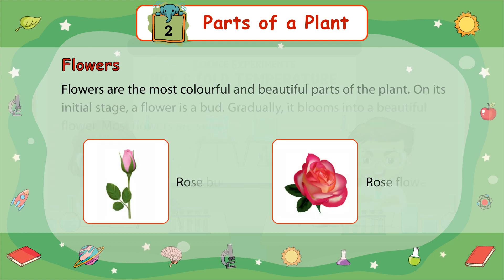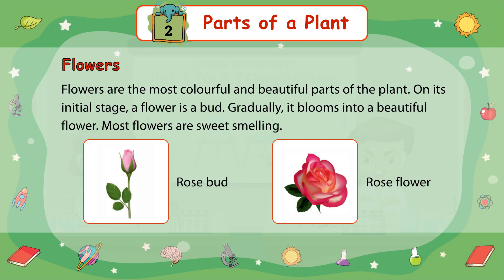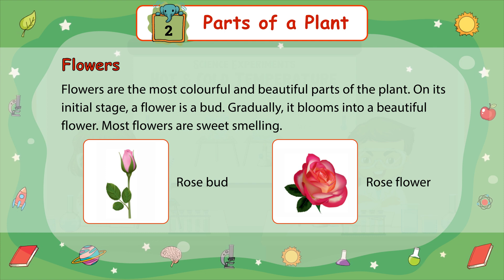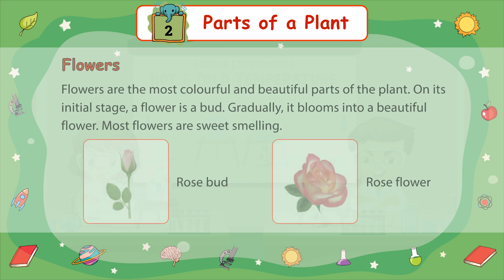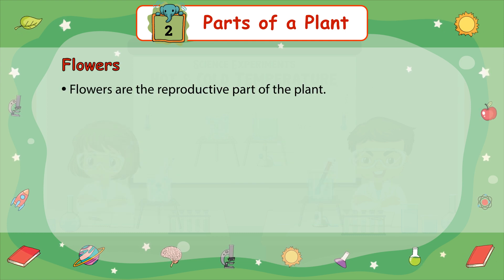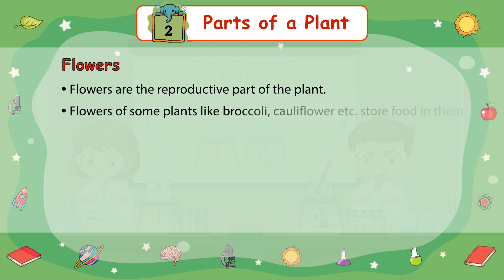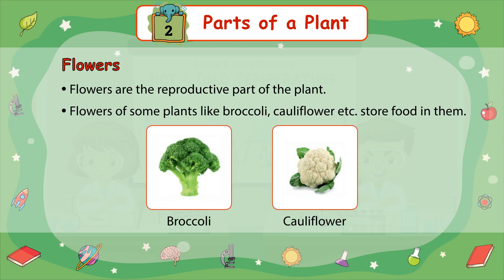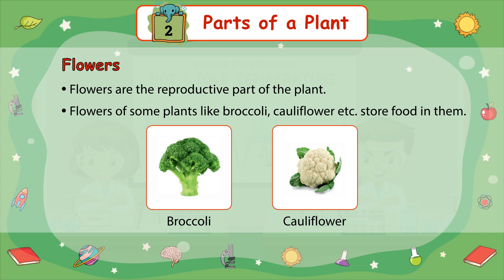Flowers are the most colorful and beautiful parts of the plant. In its initial stage, a flower is a bud. Gradually, it blooms into a beautiful flower. Most flowers are sweet-smelling. Flowers are the reproductive part of a plant. Flowers of some plants like broccoli, cauliflower, etc. store food in them.